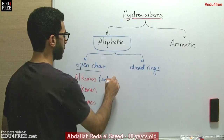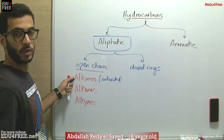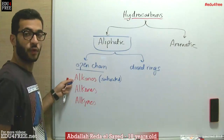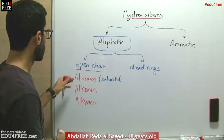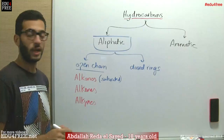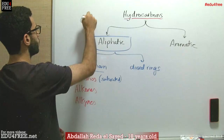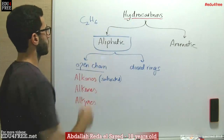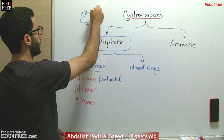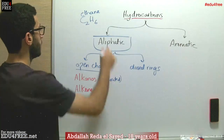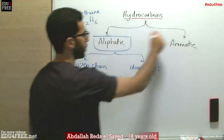Alkanes are called saturated. They are called saturated because all of the carbons form single bonds — or in other words, all of the carbons are attached to hydrogens. For example, C2H6, which is ethane, and its molecular structure is as follows.